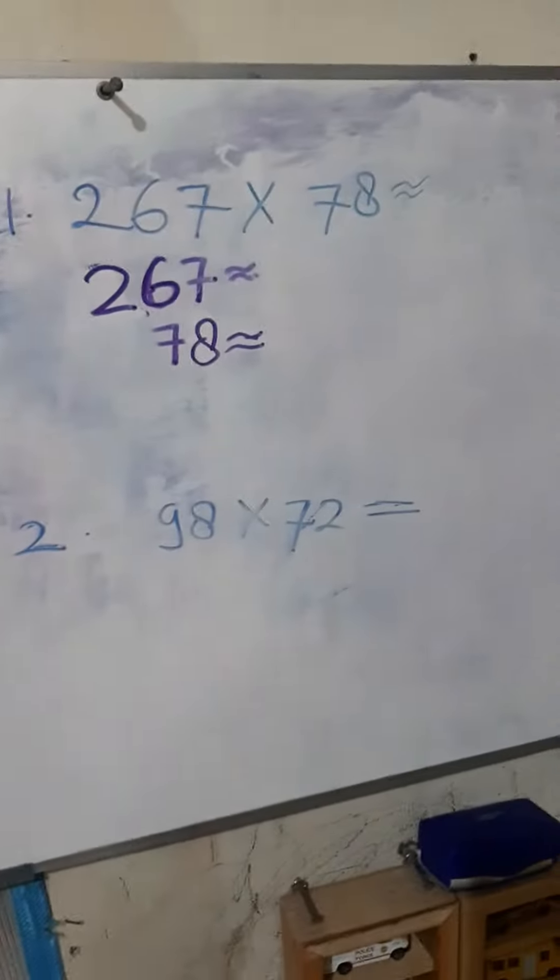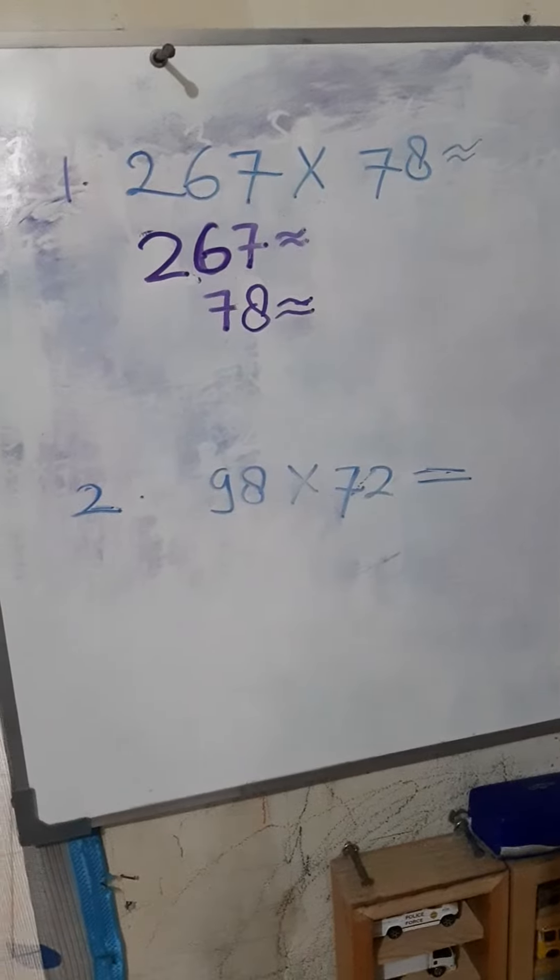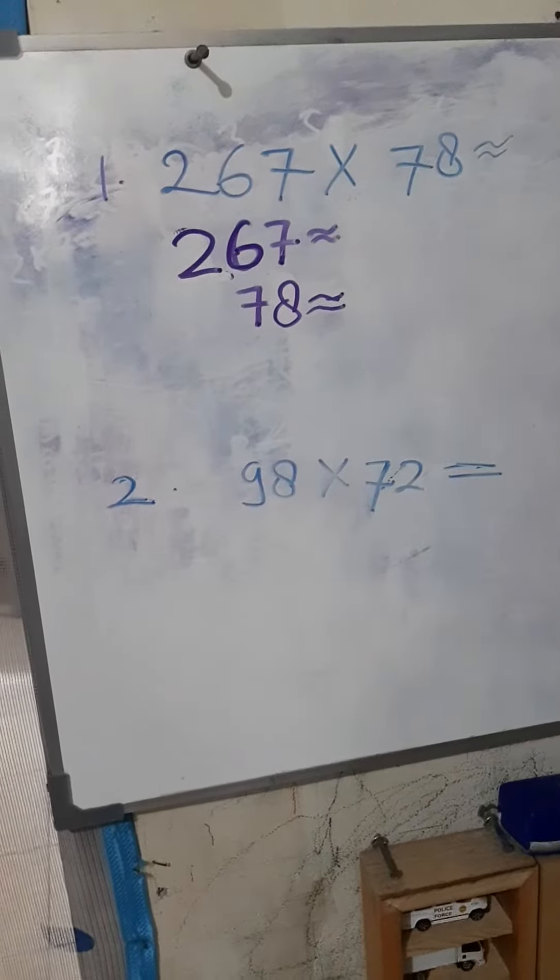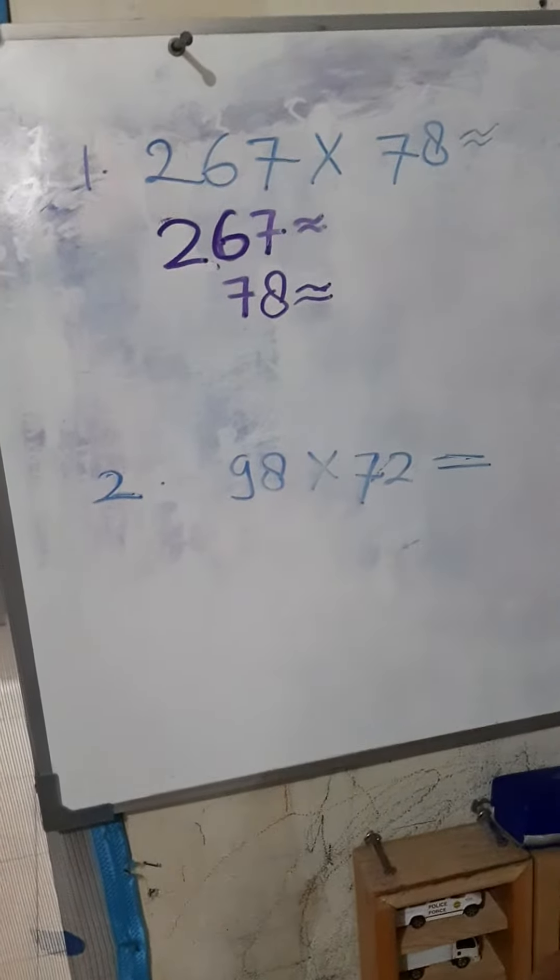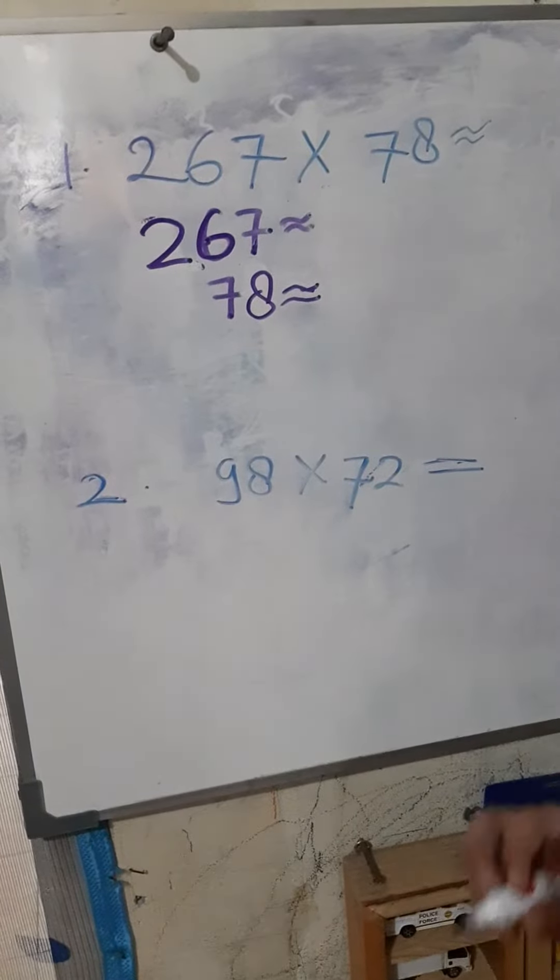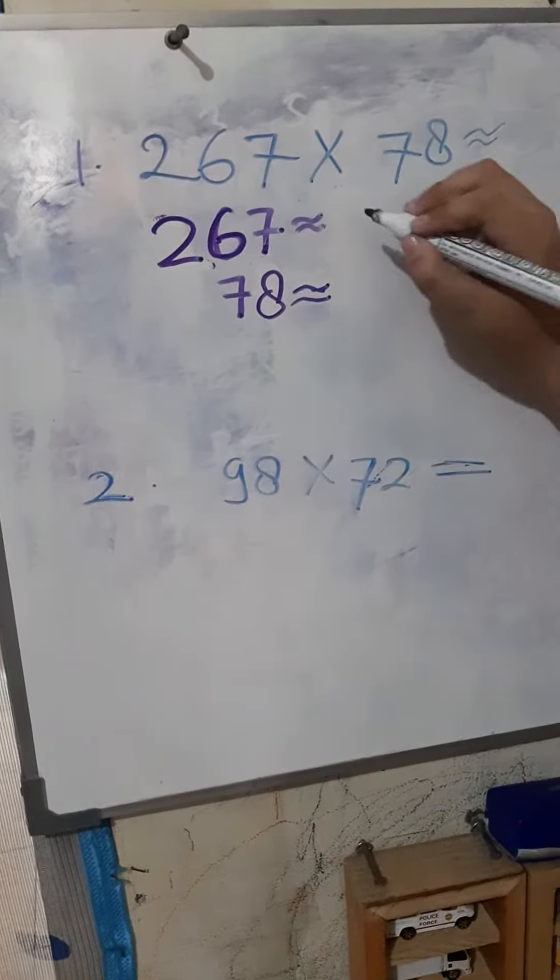The question is 267 times 78. First, we change 267 to the nearest 100. The answer is 300.